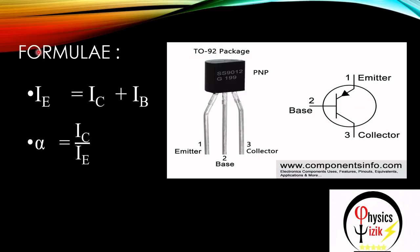We need to know three terms. IE is your emitter current — the current that passes through the emitter pin. IC is your collector current, and IB is your base current — the current which passes through the base. The first formula is IE = IC + IB. The second formula is the gain factor alpha, which is the ratio of collector current to emitter current: alpha = IC / IE.